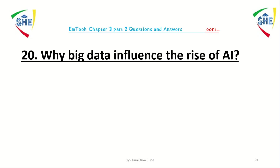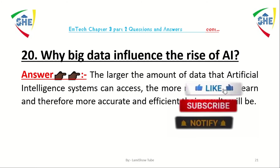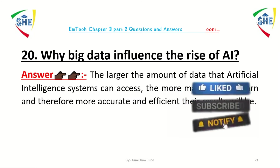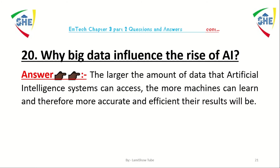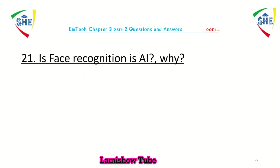Question number 20: why does big data influence the rise of artificial intelligence? The larger amount of data that an AI system can access, the more machines can learn, and therefore the more accurate and efficient their results will be. Data is the backbone for artificial intelligence, which is why big data influences the rise of AI.